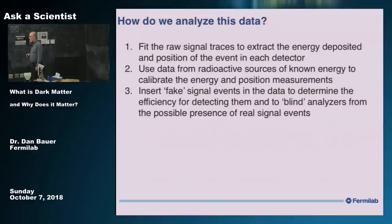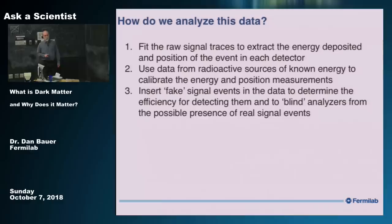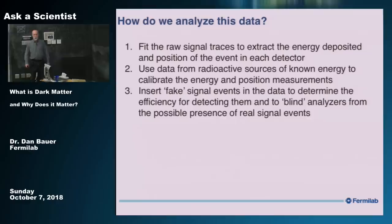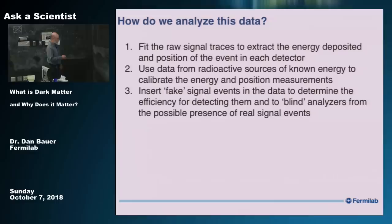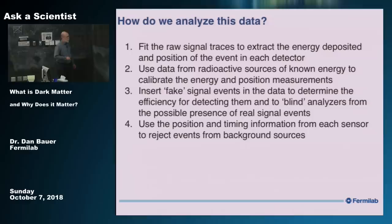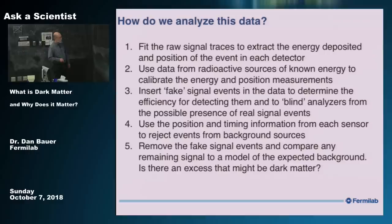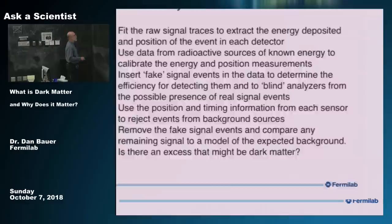There's a problem when you're looking for very rare events — a bias where, if you know where the event should be, you're tempted to keep events in that region because you'd really like to find dark matter. To avoid this, we insert fake events. Someone in the collaboration is designated to throw in the fake events, and only he or she knows where they are. They put in enough of them so that it would blind you to the presence of a small amount of signal, so you can't just tune on the signal events. At the end, once you're done, you remove the fake events — it's called opening the box — and you see what's left and whether there's any excess that might be dark matter.